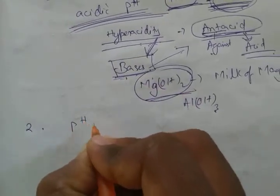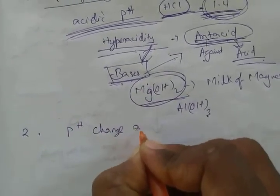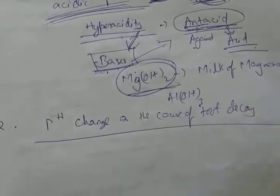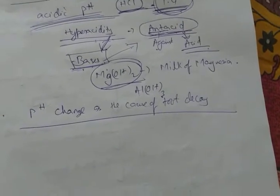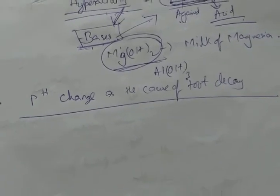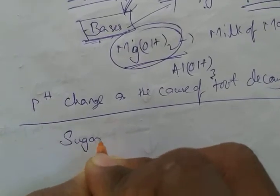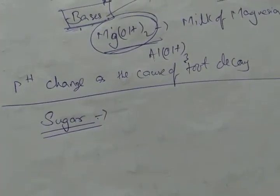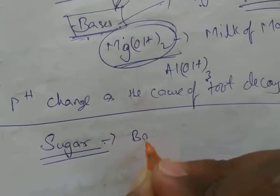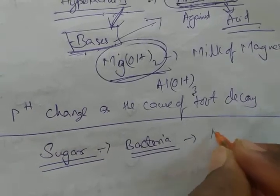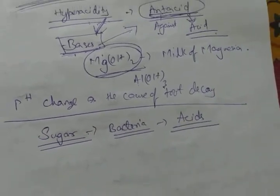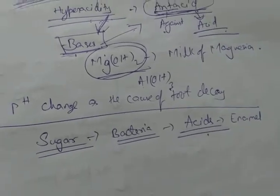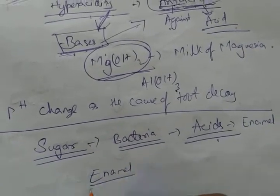Second, pH change as the cause of tooth decay. We eat foods which mainly contain sugar. If we're not cleaning our teeth properly, the sugar gets stuck in the mouth. When sugar is left over, some bacteria feed on the sugar to produce acids.